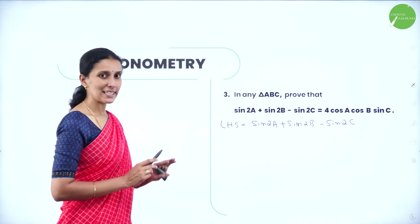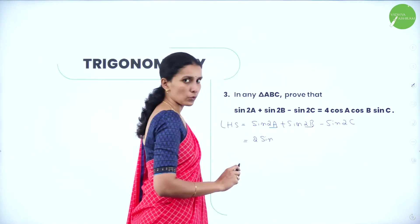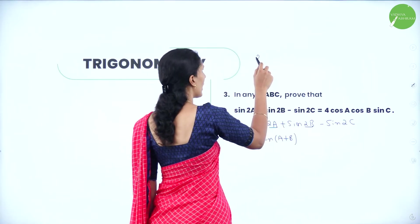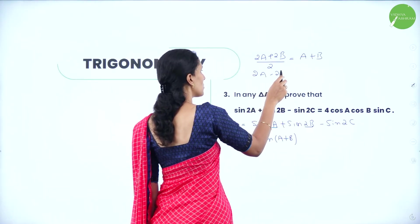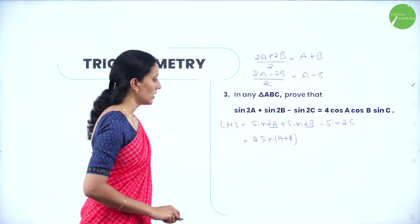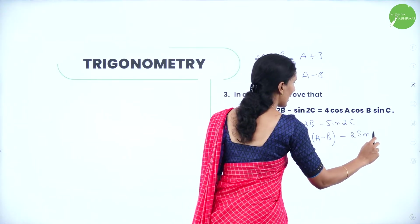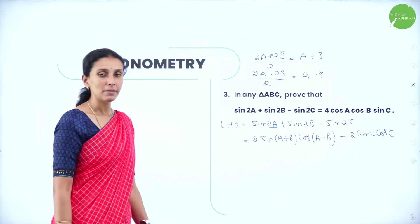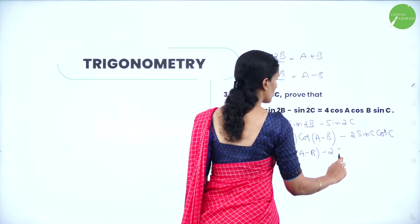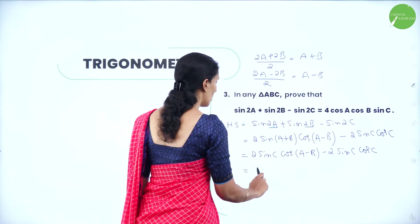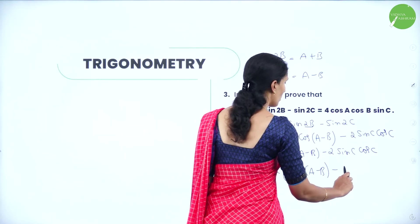For sin2A + sin2B, apply the sinC + sinD formula: 2·sin(A+B)·cos(A−B). Write sin2C as 2sinC·cosC. So the expression becomes 2sin(A+B)·cos(A−B) − 2sinC·cosC. Replace sin(A+B) with sinC: 2sinC·cos(A−B) − 2sinC·cosC. Take 2sinC as common: 2sinC·[cos(A−B) − cosC].